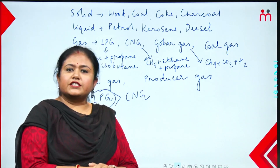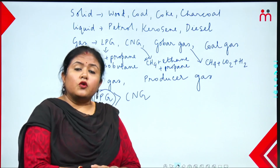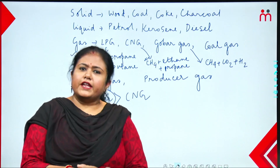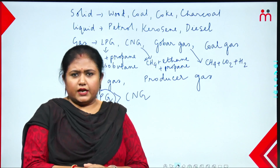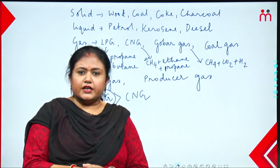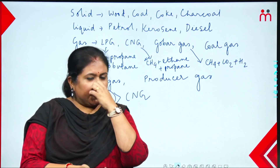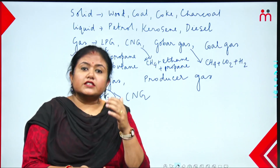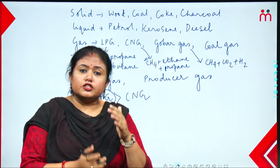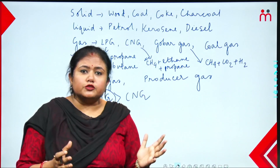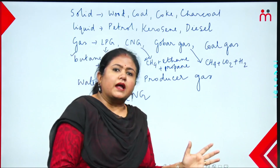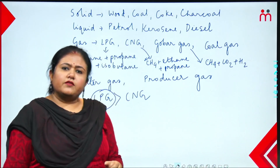Next is biogas. Biogas is produced from the slow decomposition and degradation of plant and animal waste — prolonged decomposition of plant and animal waste produces biogas.